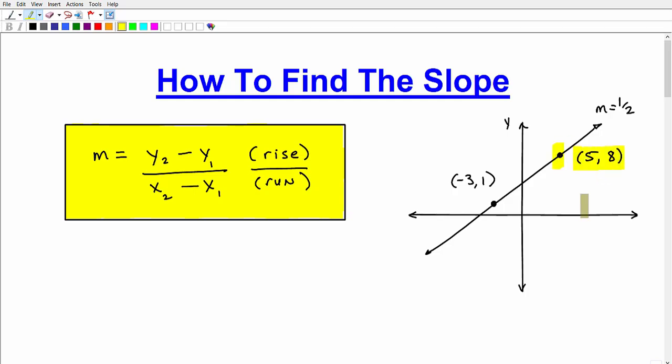Let's say this point here, 5, 8, is on this particular line. And then we have another point over here, negative 3, 1.